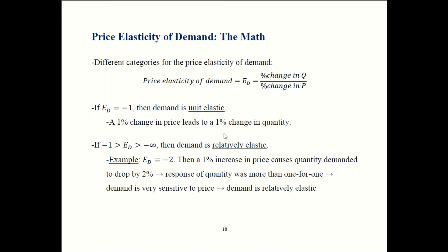So intermediate case is called unit elastic demand. That's when a demand elasticity is minus one. That gives you this one for one change. So if prices go up by one percent, people buy one percent less.